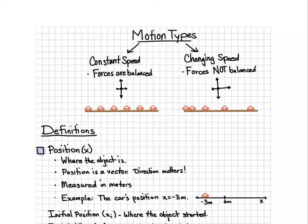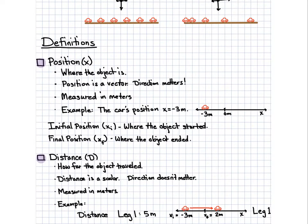So here we go. Position — that's pretty straightforward. Position answers the question: where the object is. What do we measure position in this class? Meters. Always meters. If you get a problem in miles or kilometers or centimeters or whatever, typically we're going to have you convert it to meters. And you can use Google for that — Google is really good at converting.